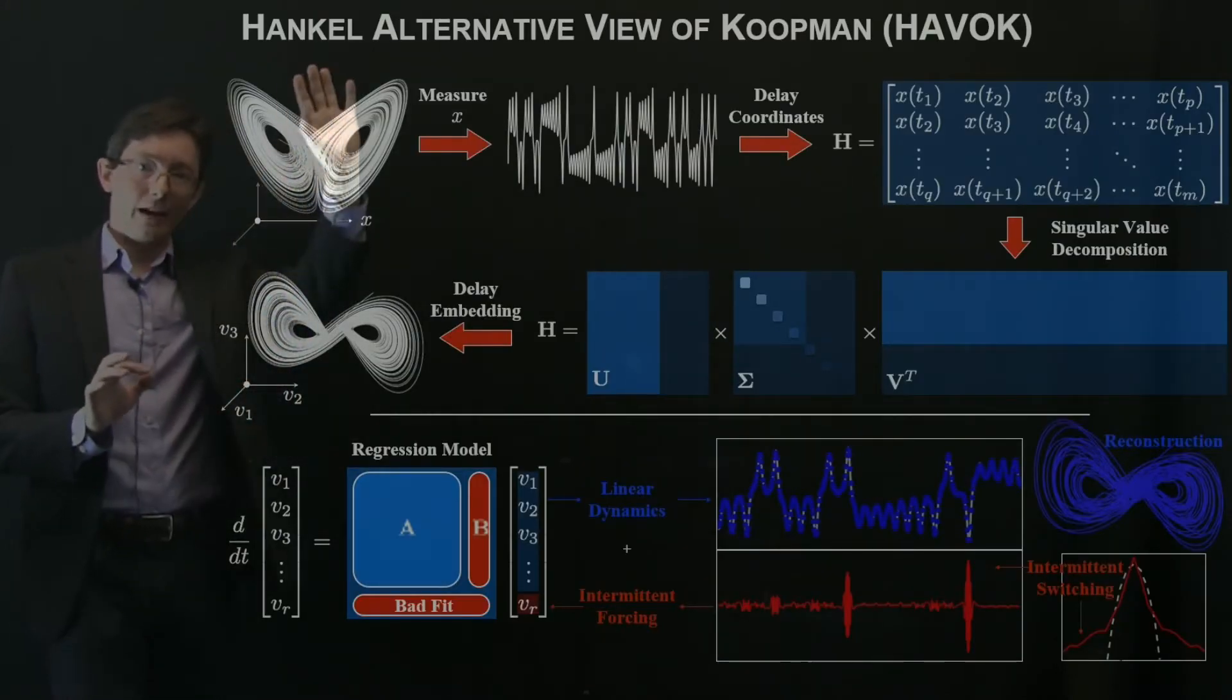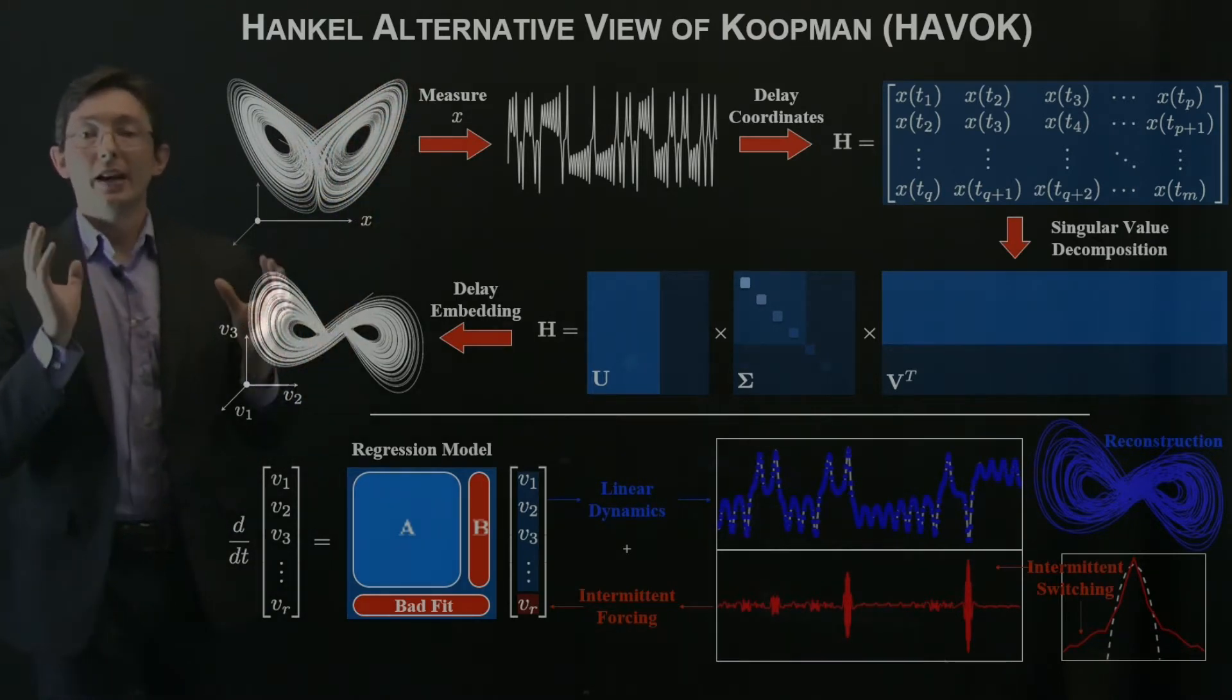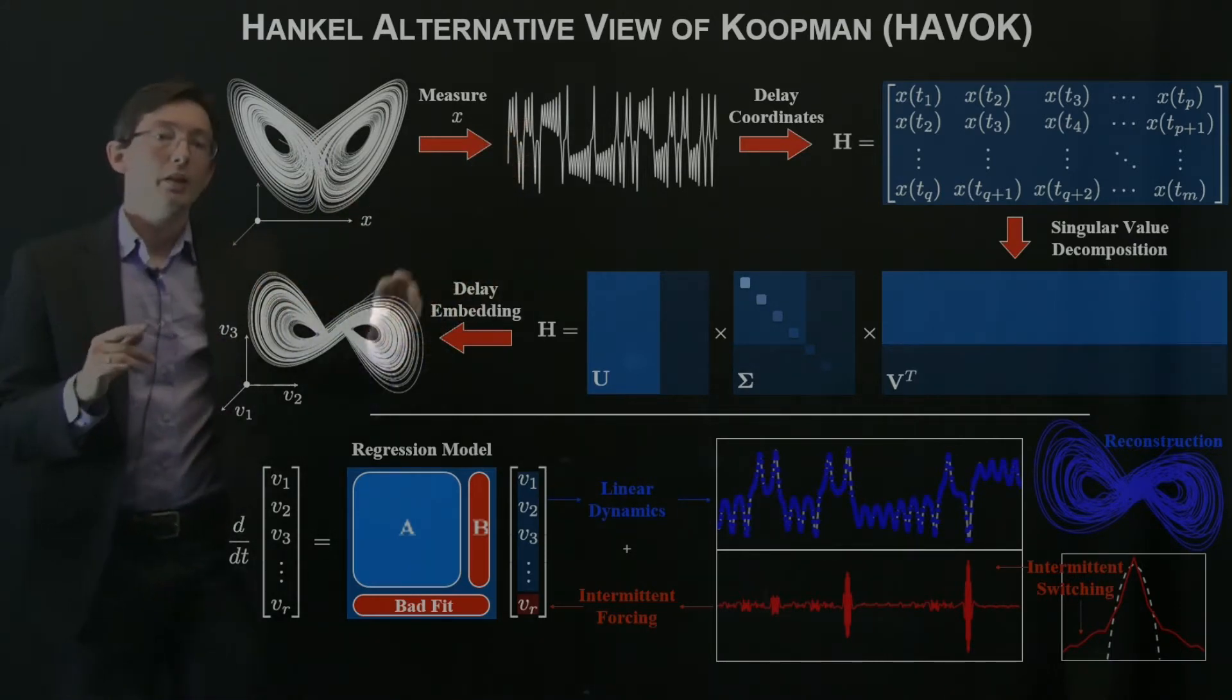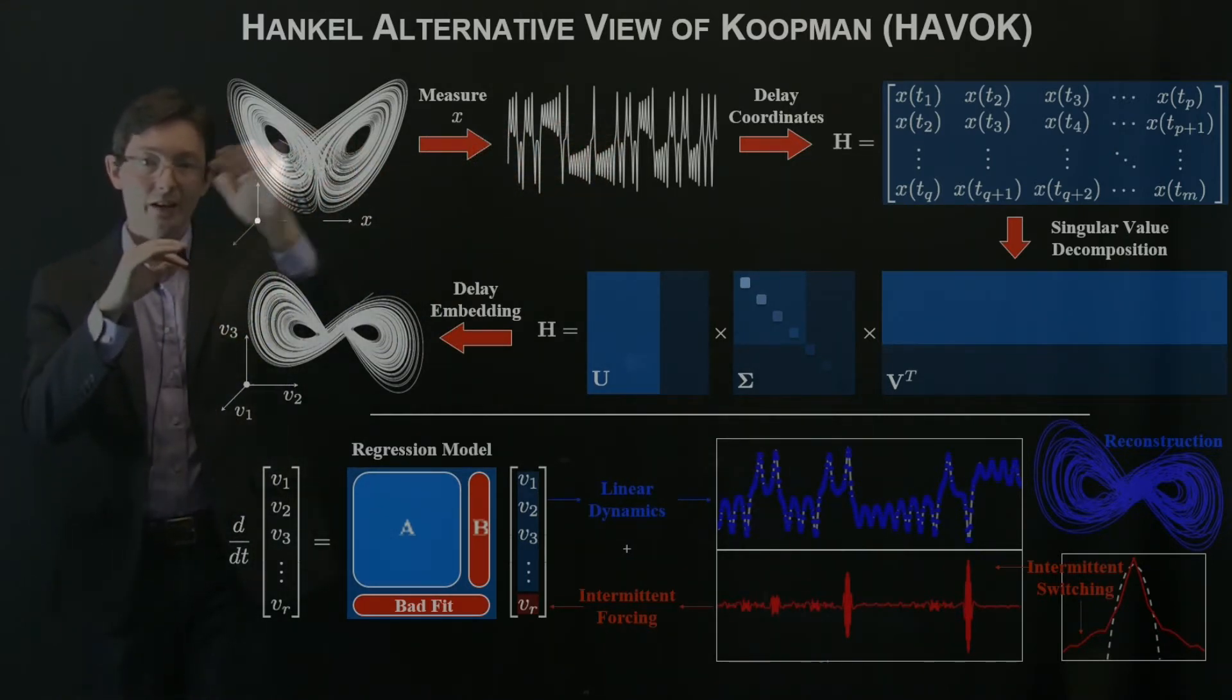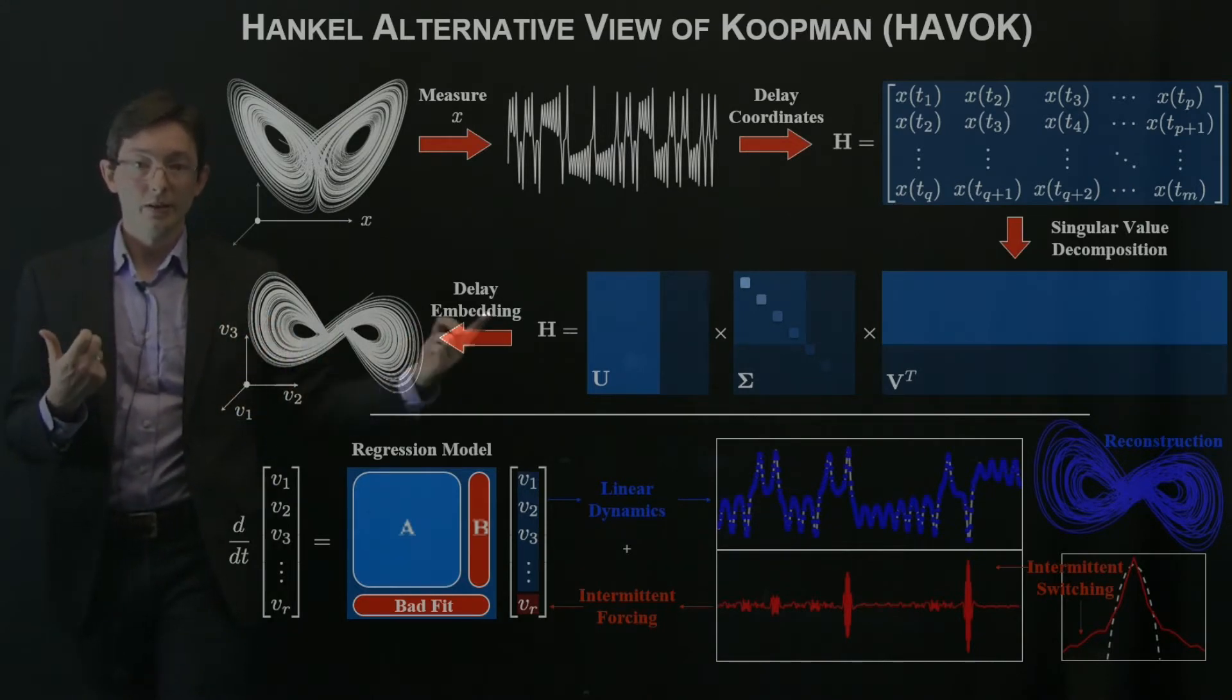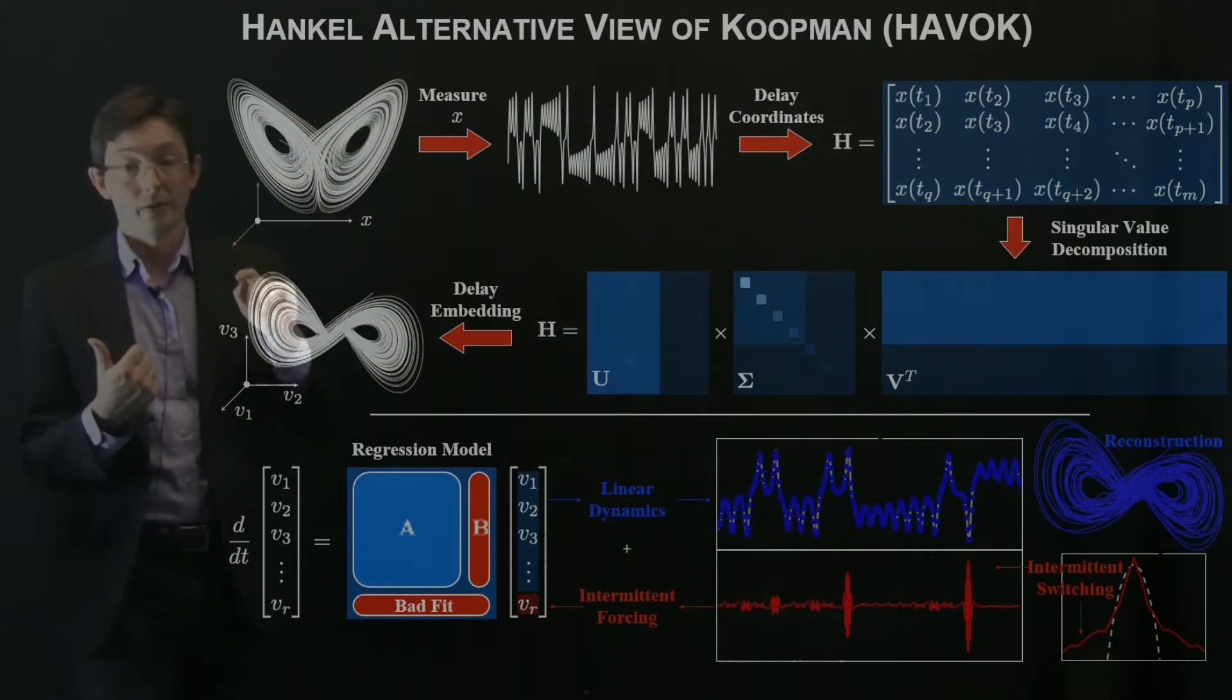Just remember we have this Hankel alternative view of Koopman, this HAVOK analysis. The idea here is you have a real system, a complex chaotic system. You have limited measurements, a time series of limited measurements of your system. You build up a Hankel matrix by taking time-shifted copies of this measurement, stacking them as rows of a Hankel matrix. And if you take the singular value decomposition, you get these eigentime delay coordinates that you can then use to get a delay embedding. So this delay embedded attractor is diffeomorphic to the original Lorentz attractor.